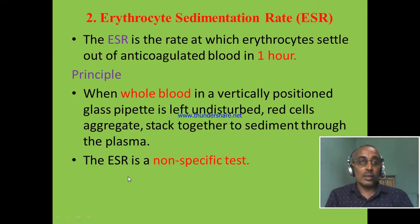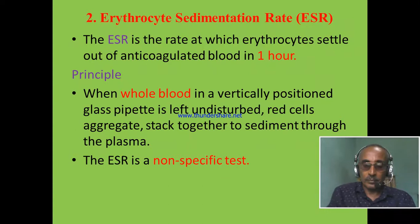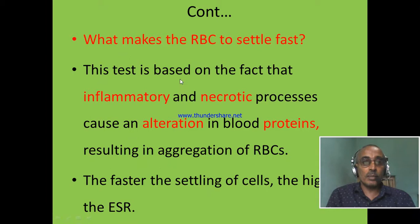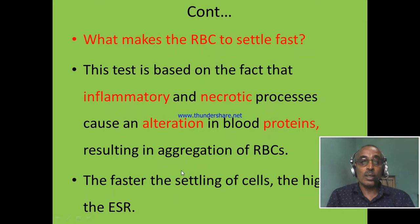The ESR is a non-specific test. This means ESR does not tell us the exact type of disease. What makes ESR settle fast? This test is based on the fact that inflammatory and necrotic processes can cause alteration or change in blood protein concentration. So when the protein in the blood increases, blood cells, especially red blood cells, will clump and aggregate together. At the end, they settle at the bottom of the tube. By this, the plasma length from top to the bottom increases. The faster the settling of cells is, the higher the ESR value.